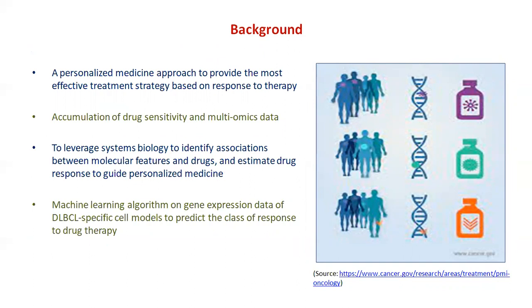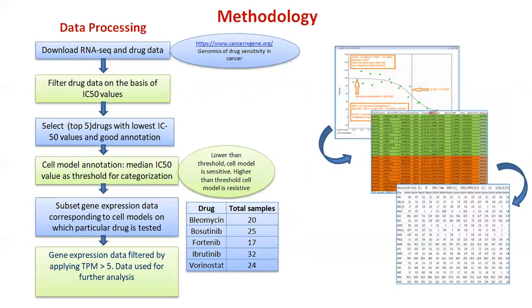DLBCL-specific cell models would be used to predict the class of response to drug therapy, as explained in the workflow chart. RNA-seq and drug data was downloaded from the Genomics of Drug Sensitivity in Cancer website. The drug data was filtered by applying an IC50 threshold, and drugs with the lowest IC50 values were searched on the NIH NCI website for proper annotation. From the top drugs, five were shortlisted for further analysis.